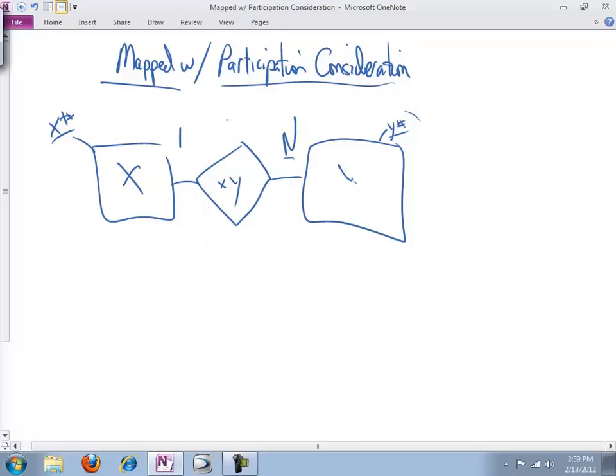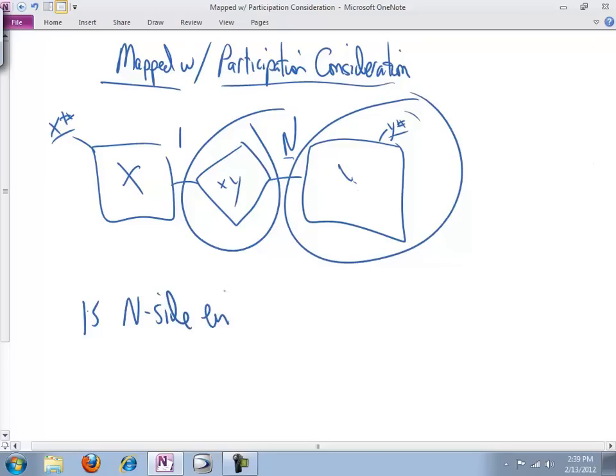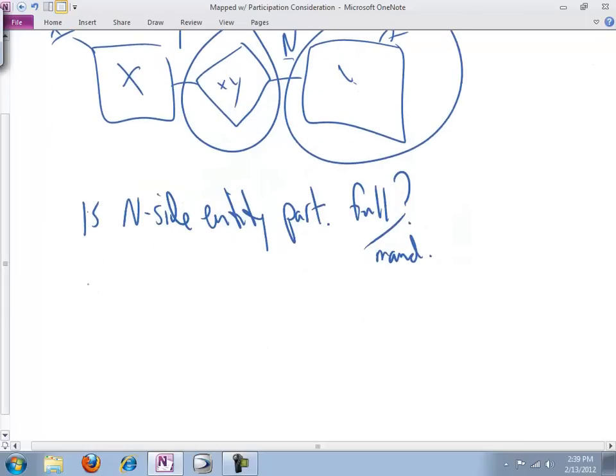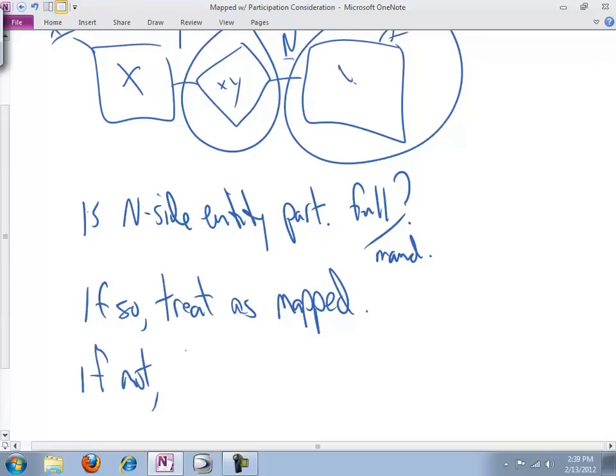We instead do this and this. So is inside entity participation, period, full slash mandatory? If so, treat as mapped. If not, treat as stable. Okay? That's the essence of it right here.